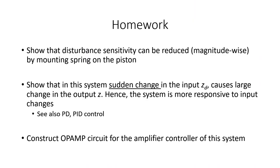The relevant homework exercise is the second bullet point. You are required to show that in this system, any sudden change in the input is going to cause a large change in the output. This means that if the input suddenly changes, the system shows a heightened change in response — that is, the system becomes more responsive and more sensitive to input changes.